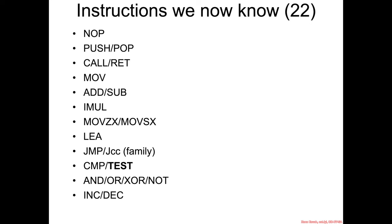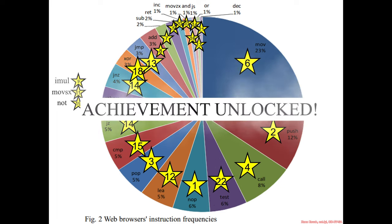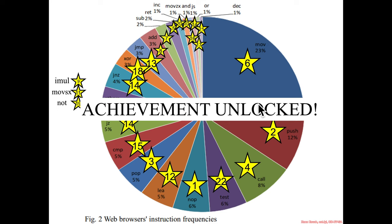We picked up one more assembly instruction: the test instruction, coming in at a whopping 6%. And with that, achievement unlocked. We've now completed 100% of all these assembly instructions. And we're only on assembly instruction 22 — that is super cool.